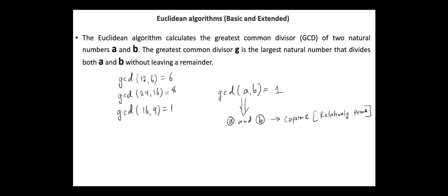This does not imply that A or B are themselves prime numbers. For example, in this example, neither 16 nor 9 is a prime number. However, 16 and 9 are co-prime numbers. No natural number other than 1 divides both 16 and 9, since they have no prime factors in common.